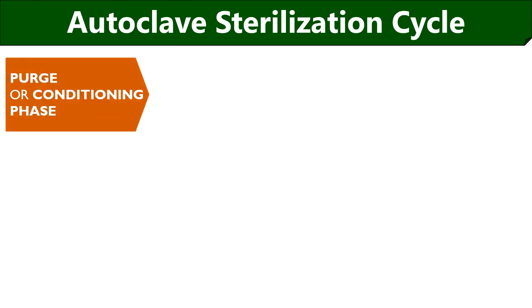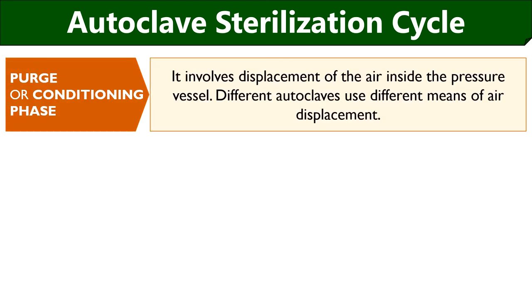Let us discuss the working and stages in the autoclave sterilization cycle. The working of an autoclave is very similar to the ordinary pressure cooker that we use in our daily life to boil or cook food. We can close the lid of an autoclave to form a sealed chamber, and under optimum temperature, pressure and time, the water is converted into steam. Depending upon the working of an autoclave, the sterilization cycle has three consecutive stages. The first one is the purge phase or conditioning phase, which involves displacement of air.